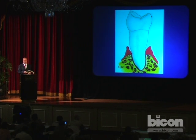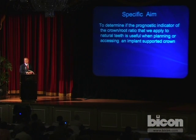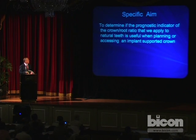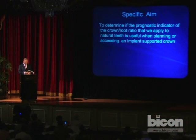When the crown of the tooth exceeds the length of the root, as in this example where we have a 1.5 to 1 crown root ratio, most clinicians would consider this to have an extremely poor long-term prognosis. So the specific aim of this study was to determine if the prognostic indicator of the crown root ratio that we apply to natural teeth is useful when planning or assessing an implant-supported crown.